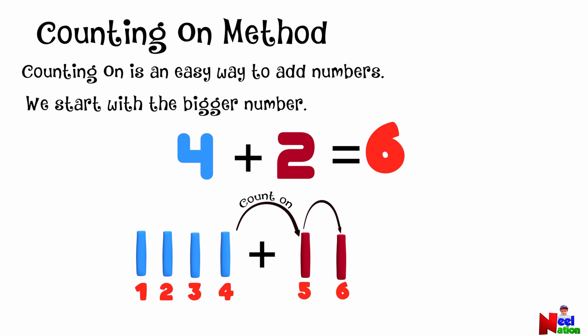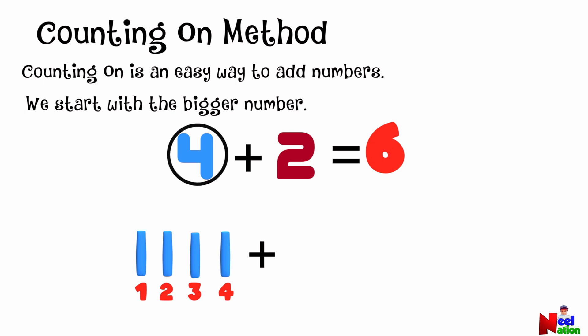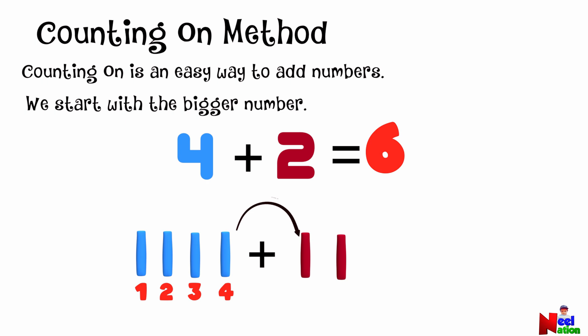For example, in four plus two, you start with four in your mind. Then, instead of counting all the way from one, you count on two more — that is five, six.